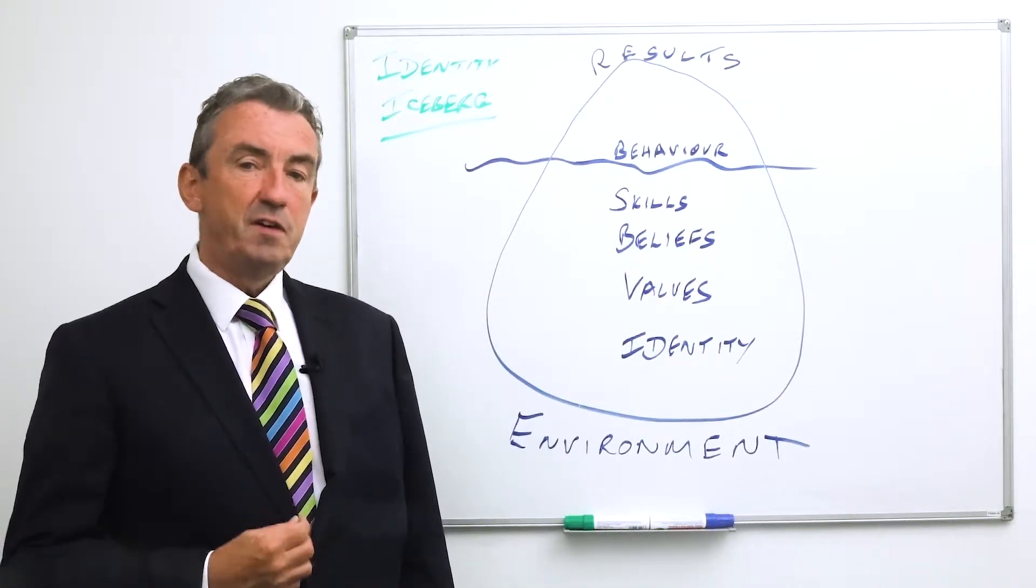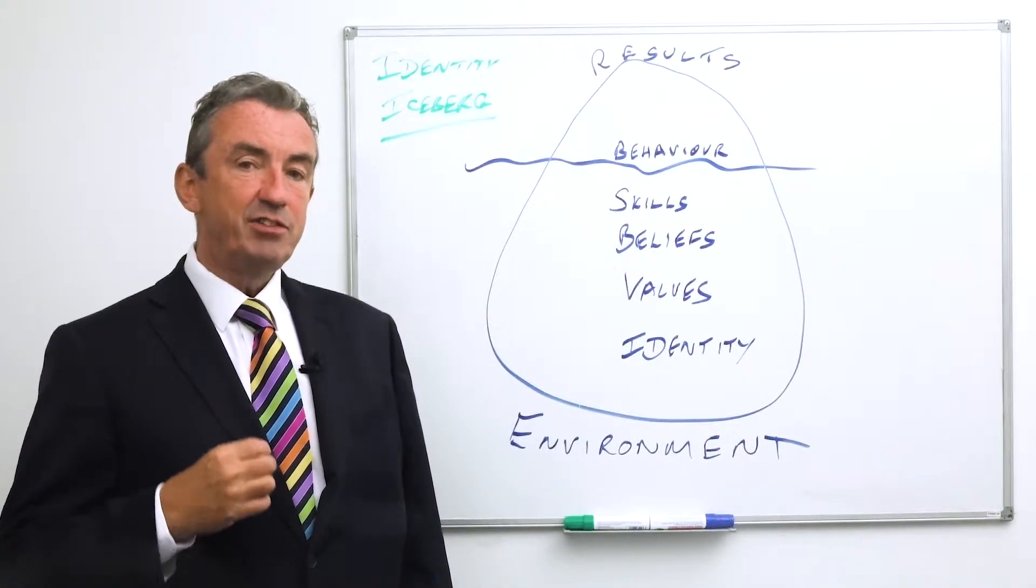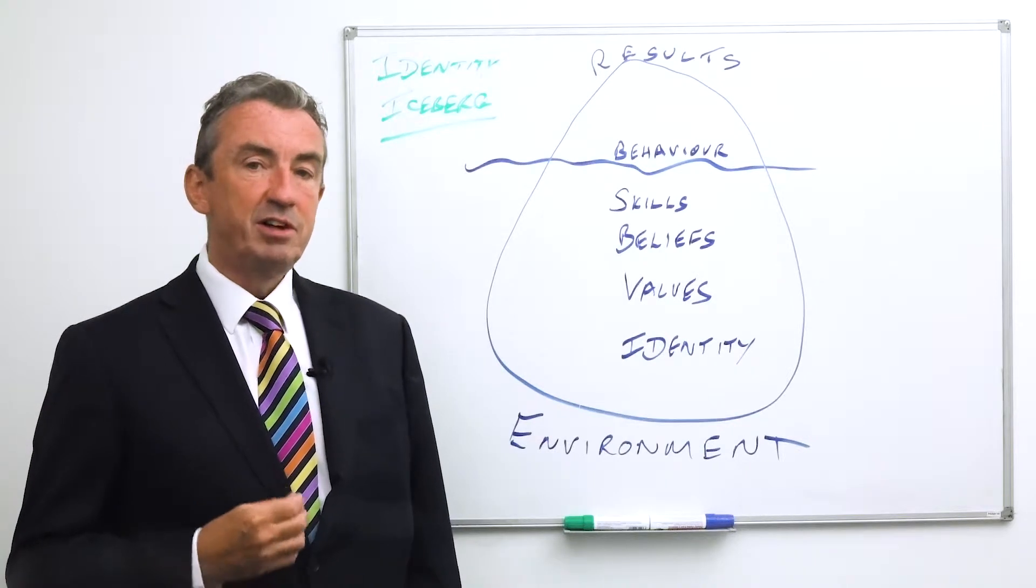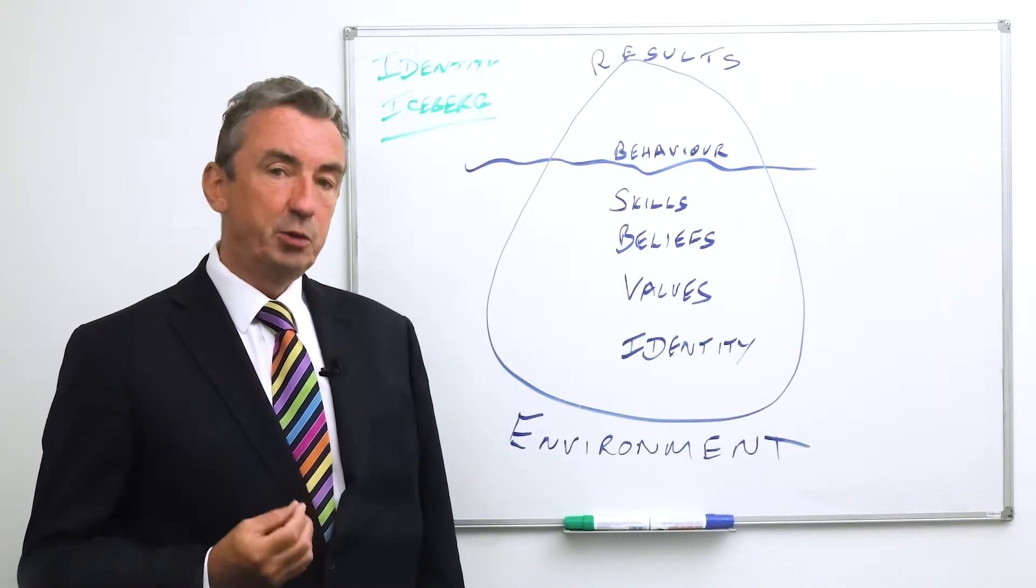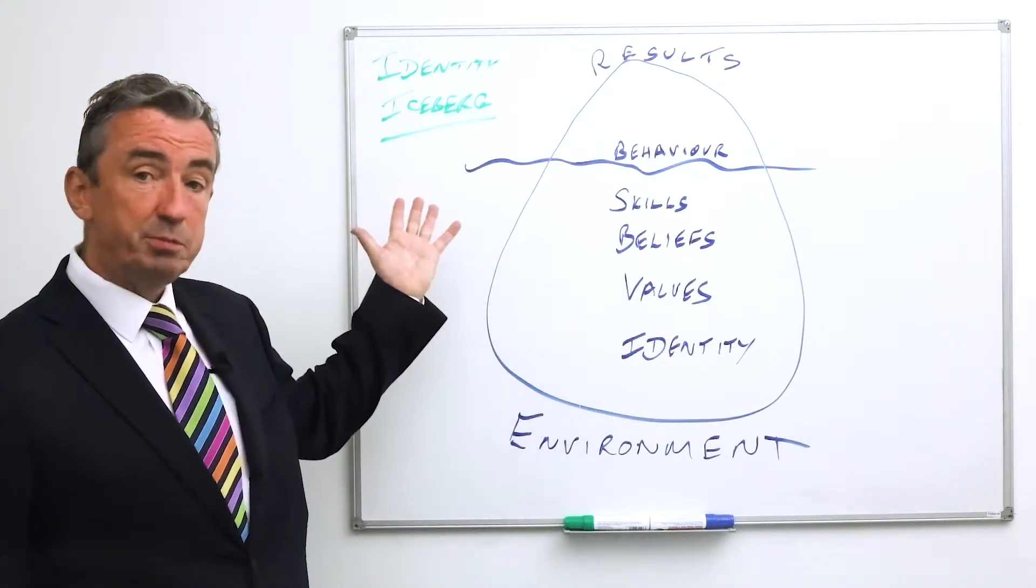Hello, today I'd like to show you five key areas to focus on to help you get better results in your business. The tool is called the identity iceberg.